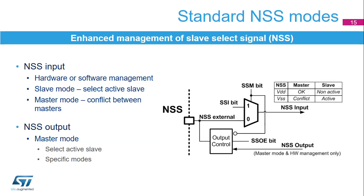The slave select signal is commonly used by the master node to select the slave node for communication. The signal implementation is mandatory in multi-master and multi-slave topologies. Though it is not mandatory in a single master-slave pair, it could be helpful for data flow synchronization regardless of the topology case. The slave select signal can operate either as an input or as an output. The NSS input can be managed by hardware or software depending on the SSM and SSI control bits.